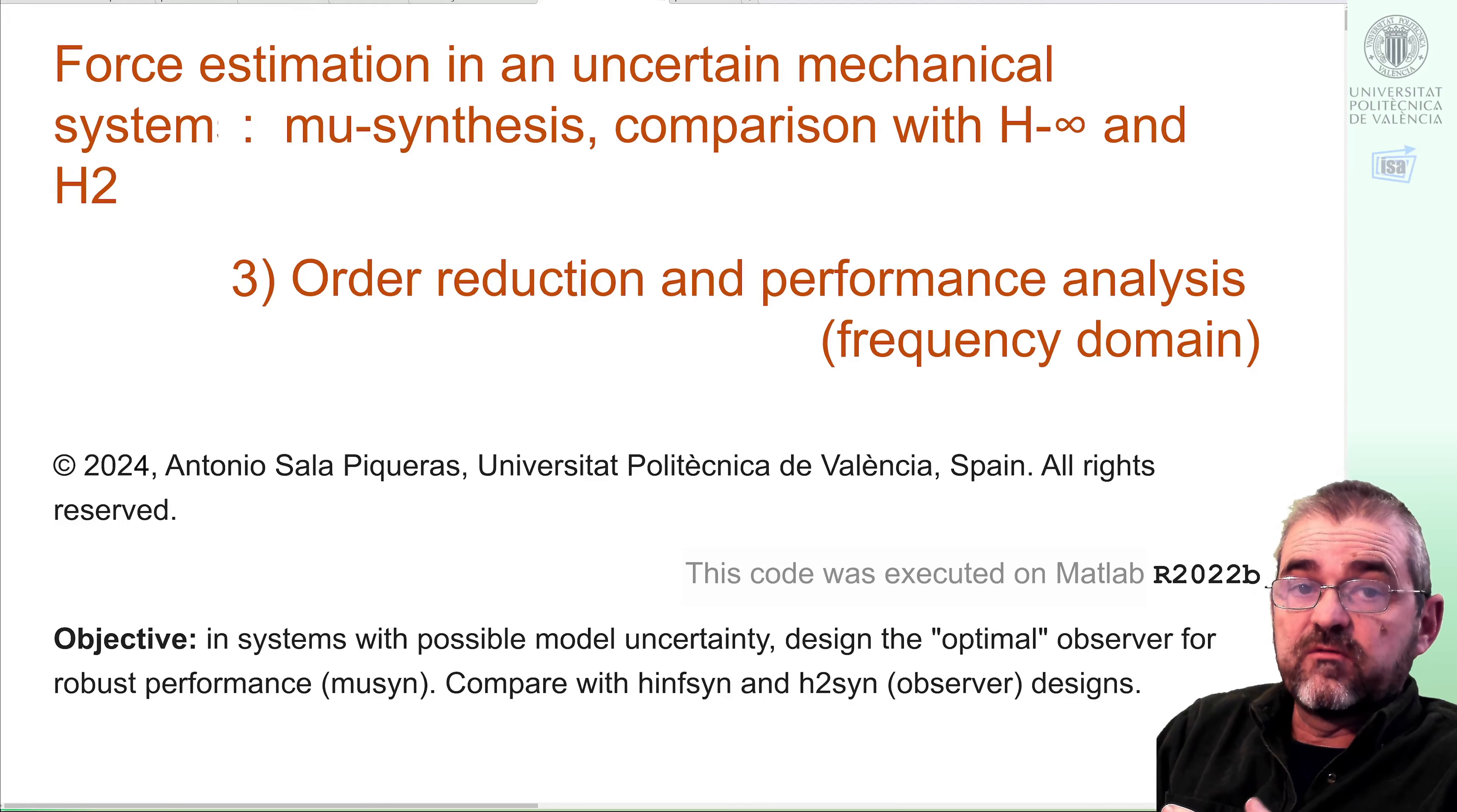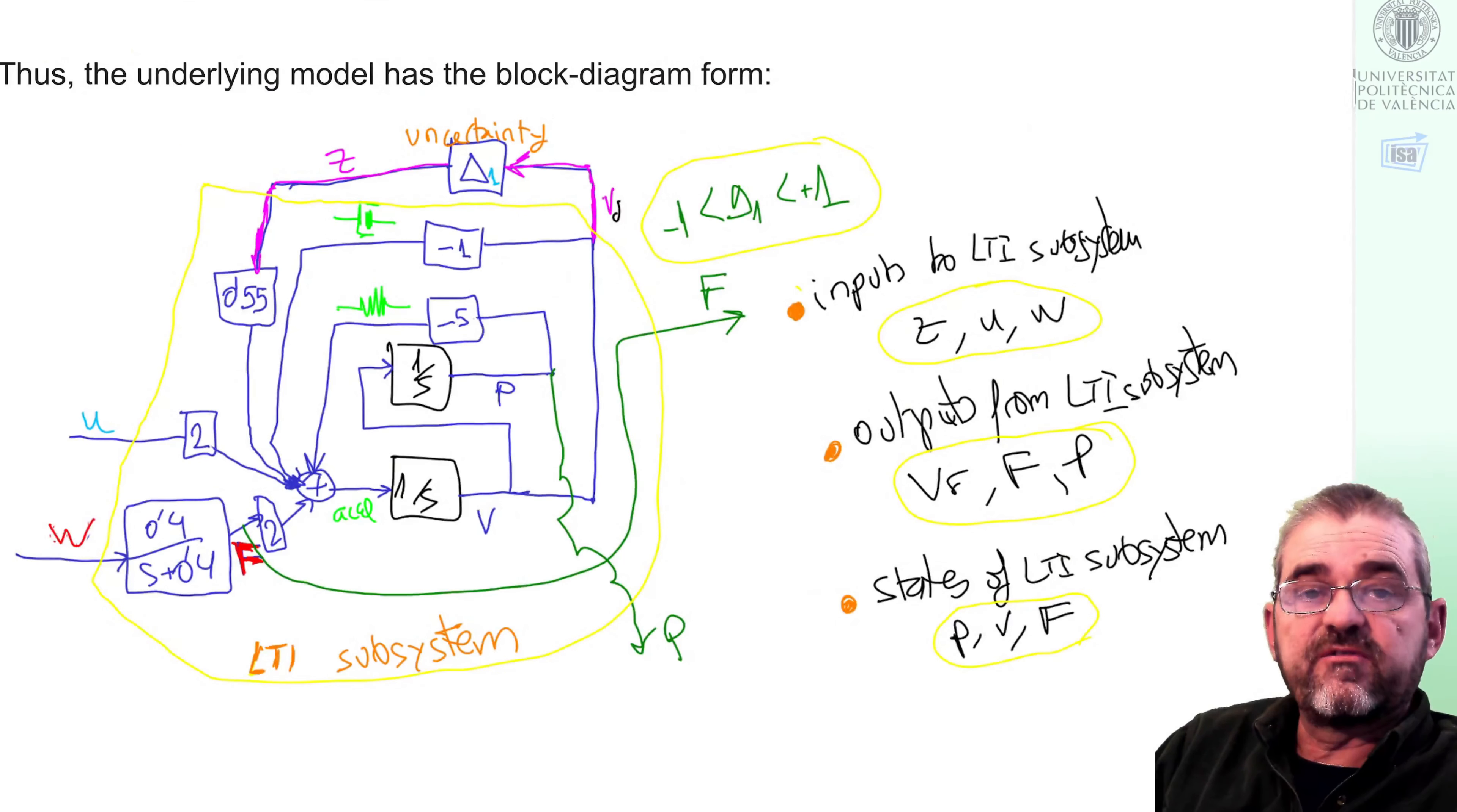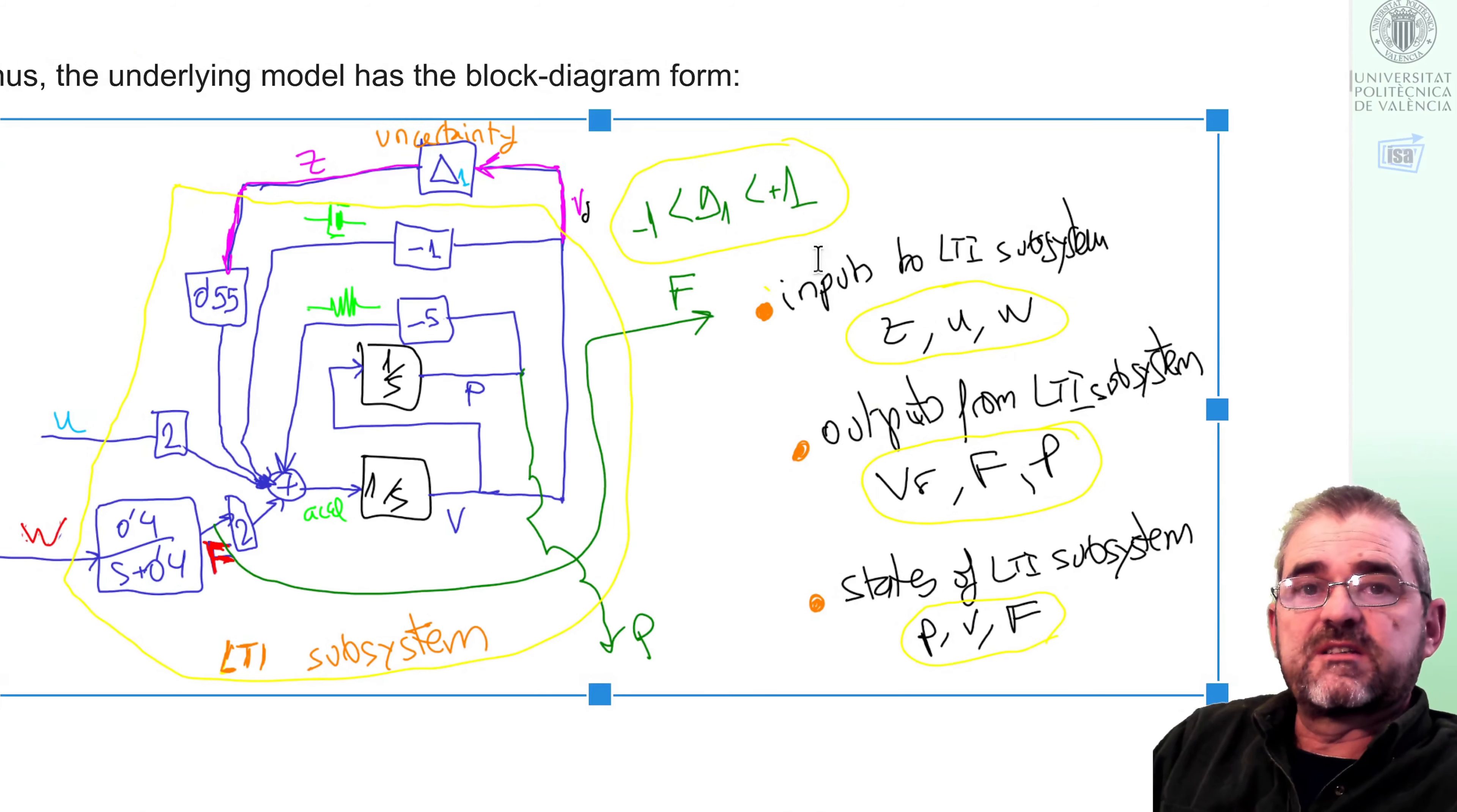Hi. In this third video, we will continue with the case study in which we are estimating an unknown force applied to a second-order system with uncertain damping. In the previous video, we addressed how to build the weighted generalized plant and carry out H2 H infinity both over the nominal plant and mu synthesis over the uncertain plant. Performance results were obtained just numerically and in this video we will interpret those results in both diagrams in frequency domain and we will also reduce the order of the mu synthesis result.